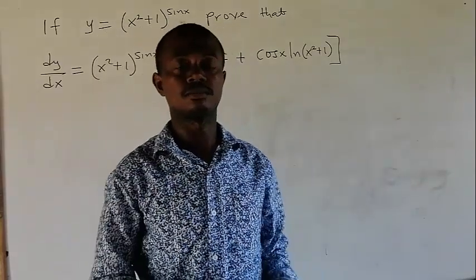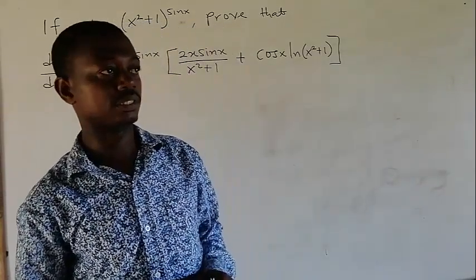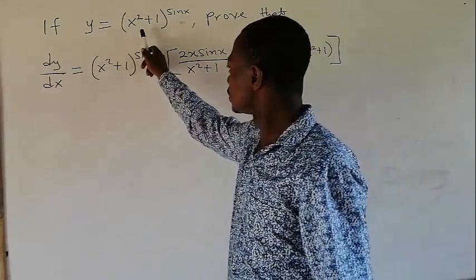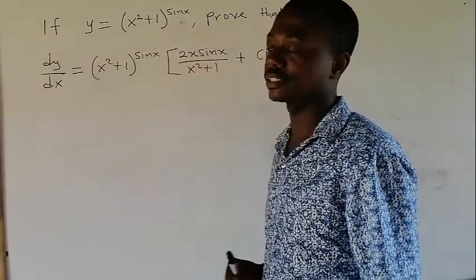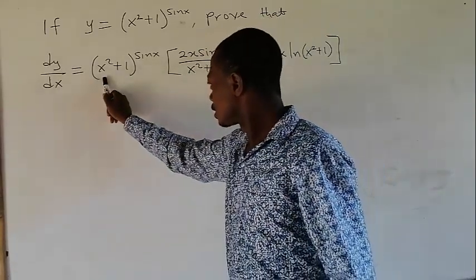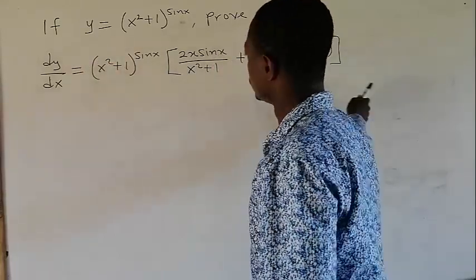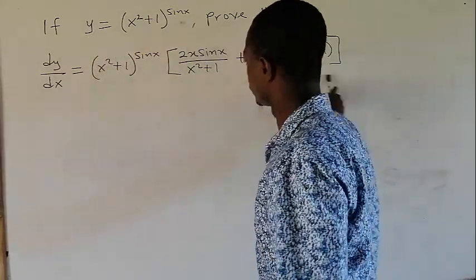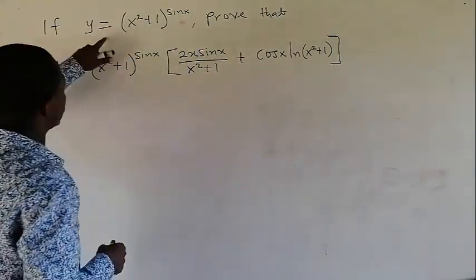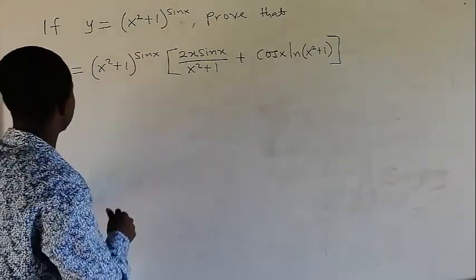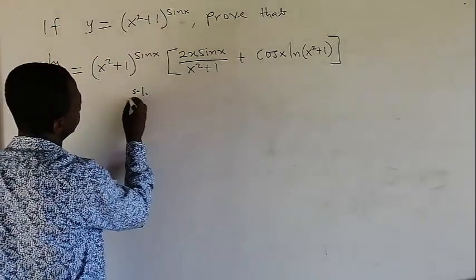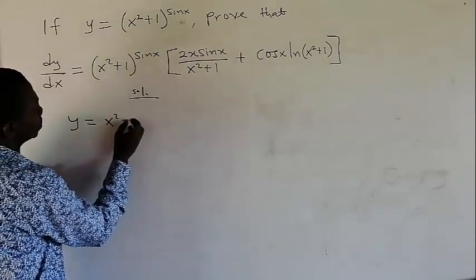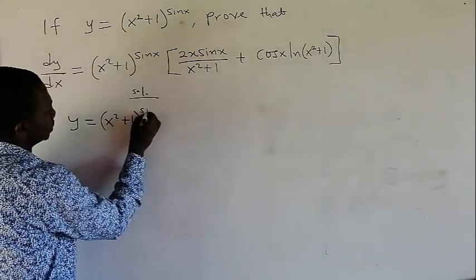My name is Teriyah Damkwa Samwal. Welcome once again to my channel. Today we are going to look at this proof. So if y equals x squared plus 1, all to the power sin x, prove that the derivative of this is as given. We are going to prove that the derivative of y equals x squared plus 1 to the power sin x is this.